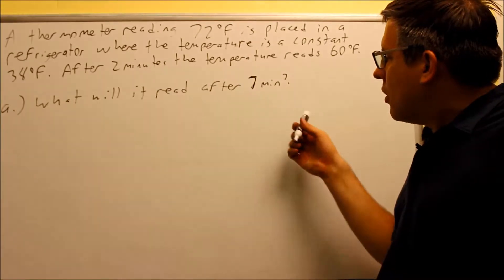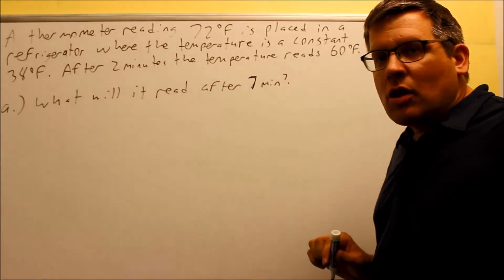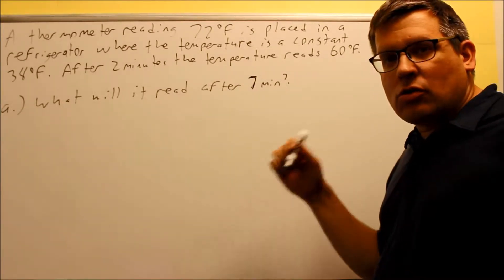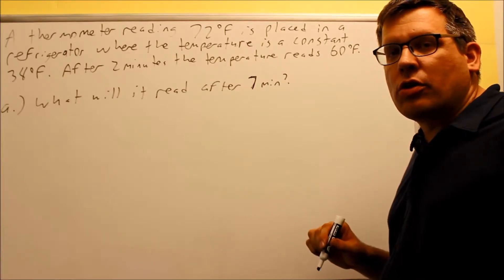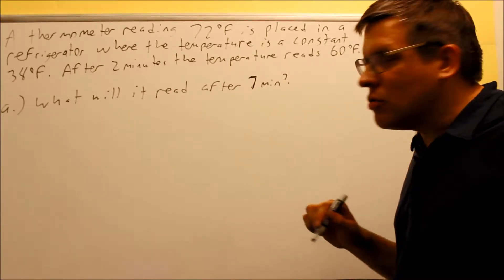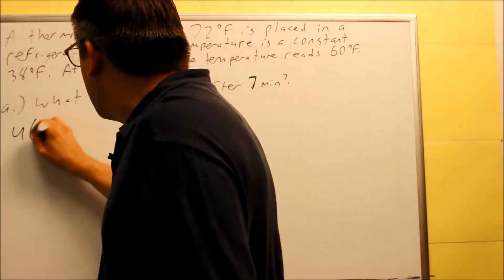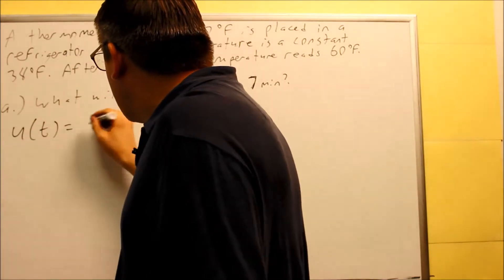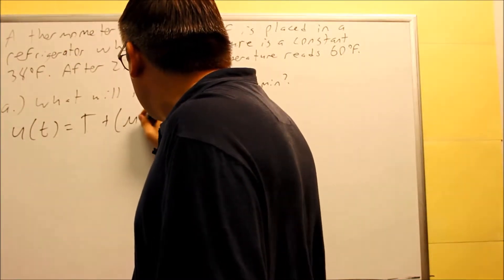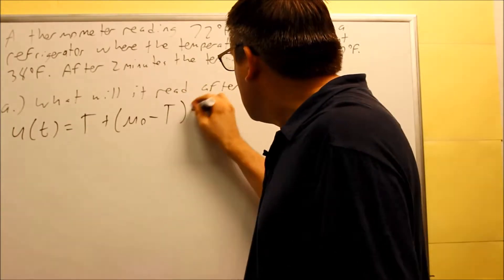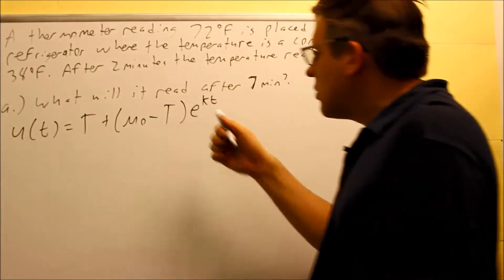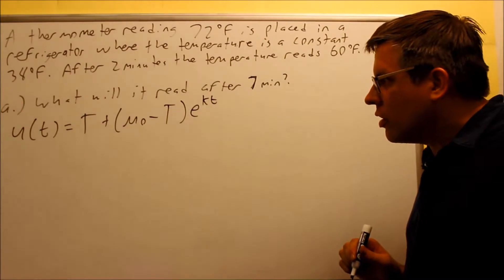Part A asks what will it read after seven minutes? Before we answer this question, we have to figure out what the actual formula itself is going to be. We've got to find the K value. The formula is u(t) = T + (μ₀ - T)e^(kt). Here is our general formula for Newton's Law of Cooling.